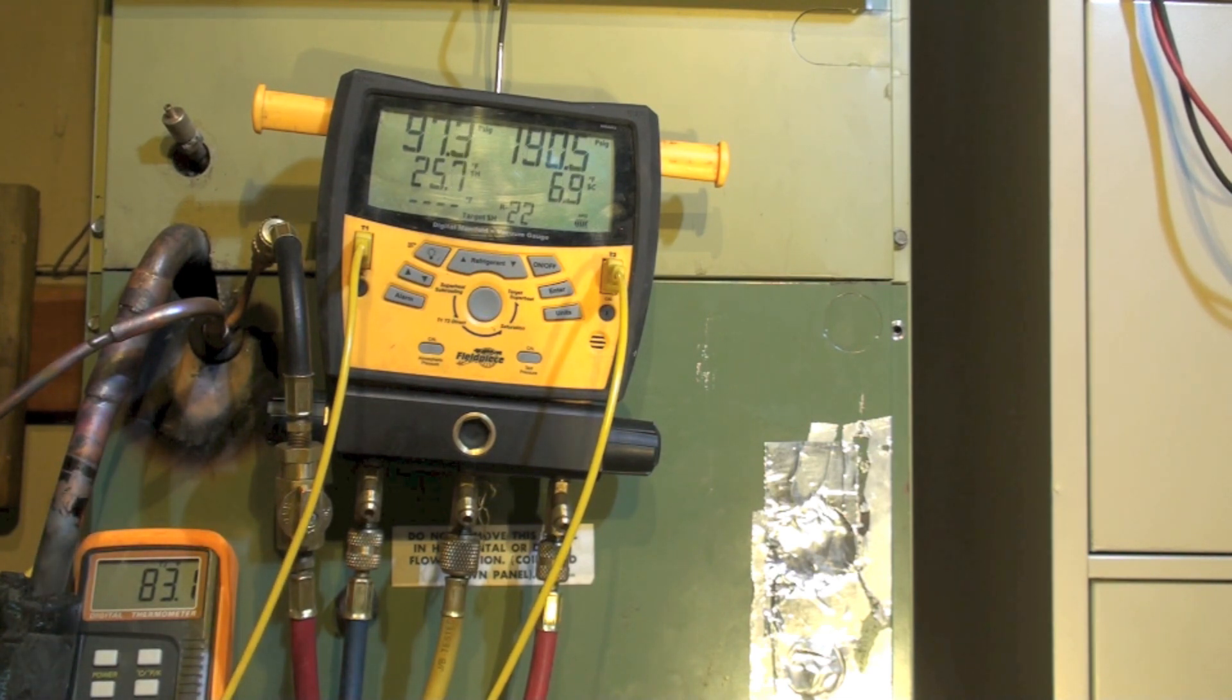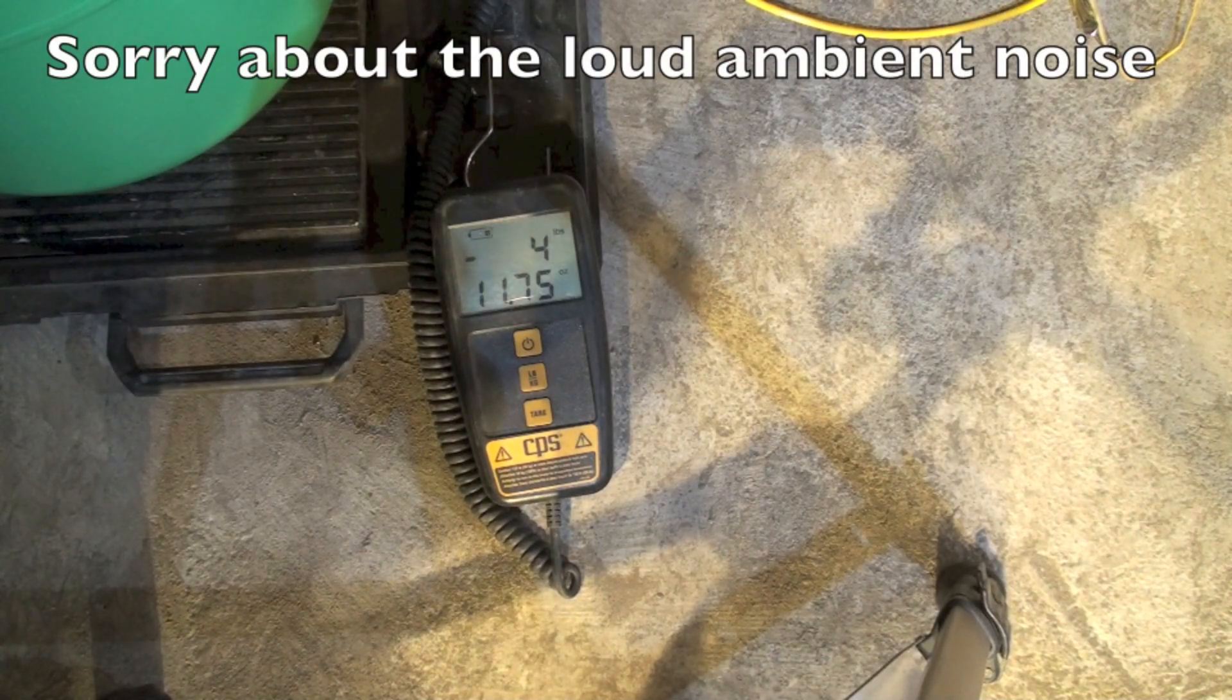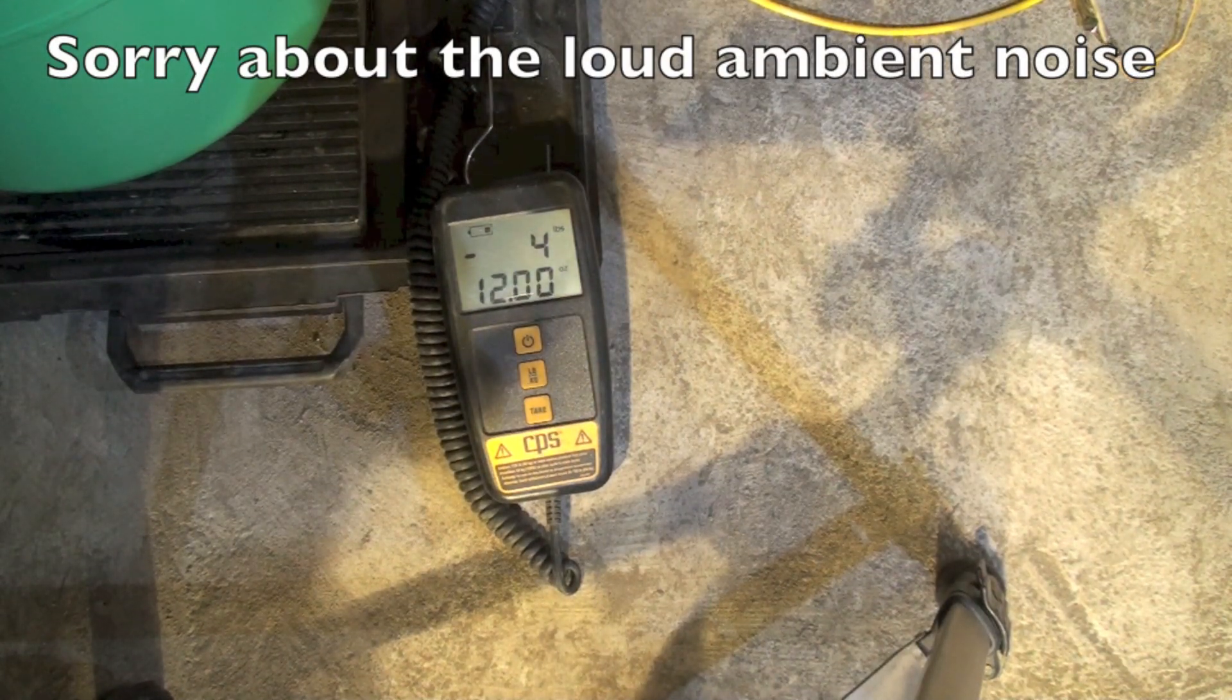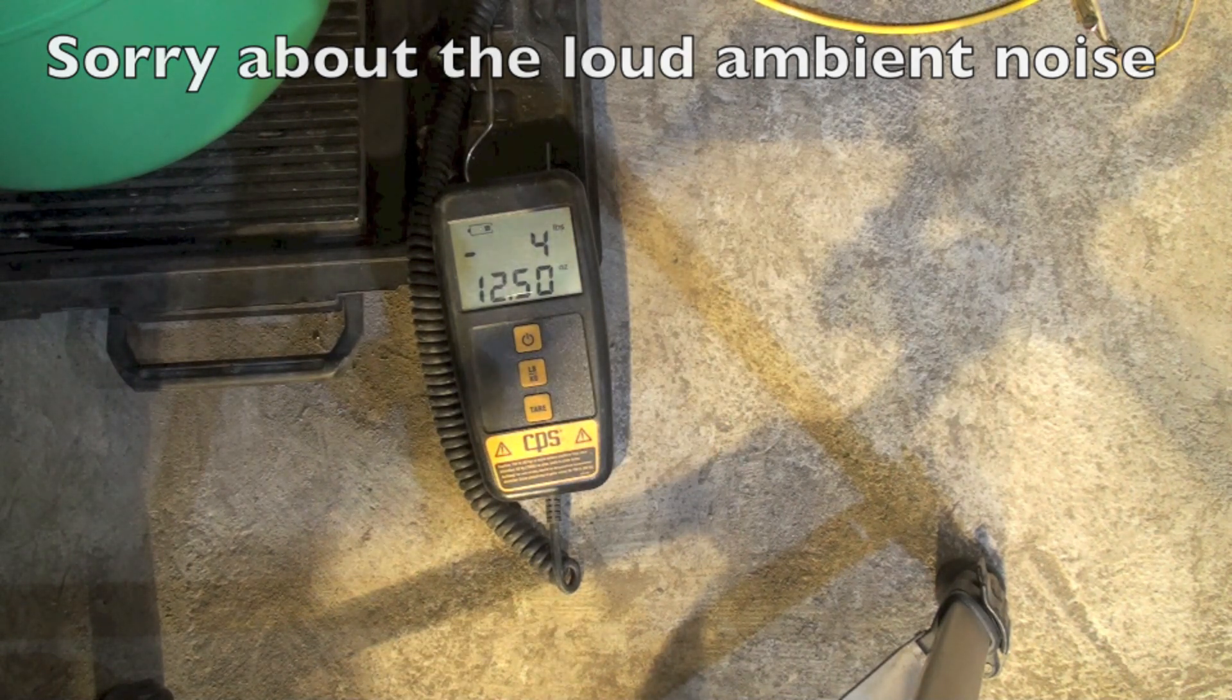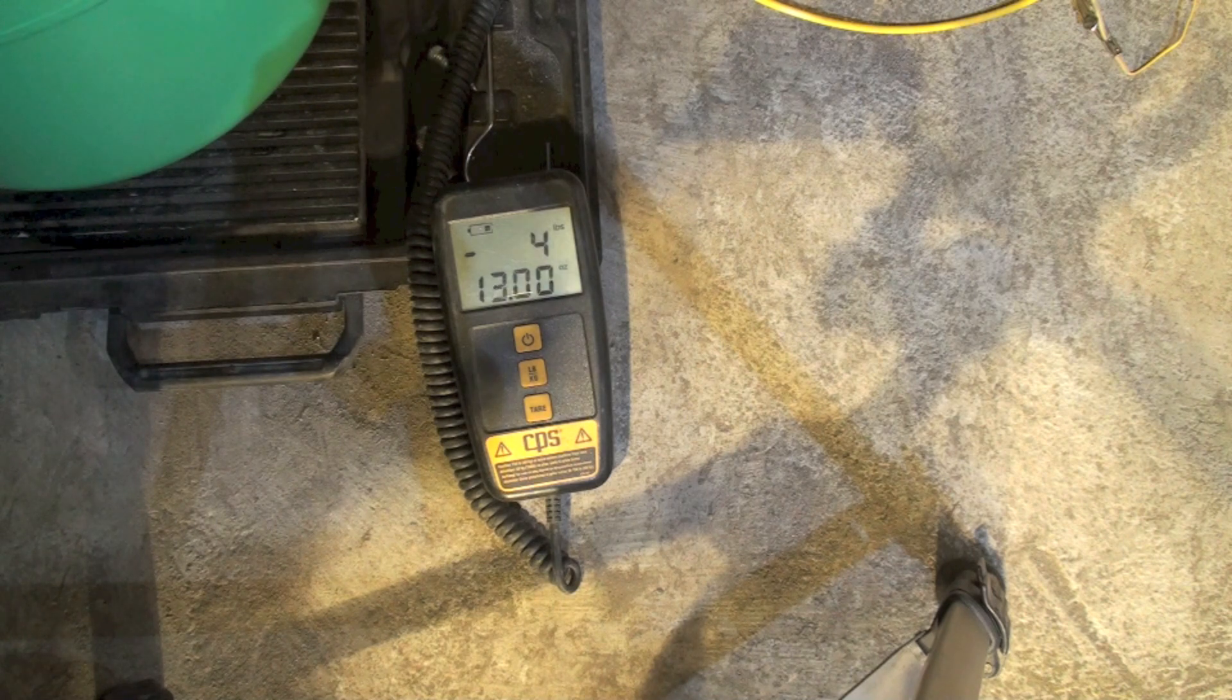What I'm going to be looking at closer is the scale. You can see we're getting pretty close to five pounds and we need seven and a half. What it's doing right now is evaporating refrigerant.